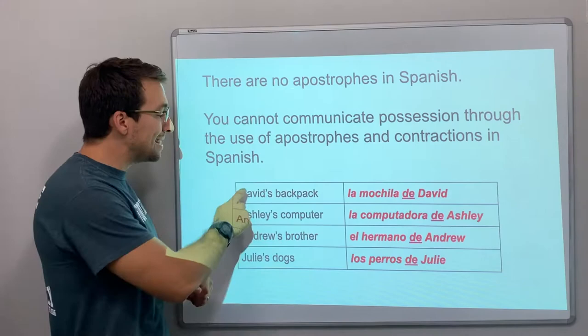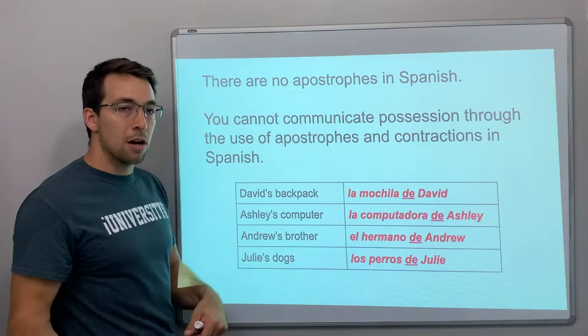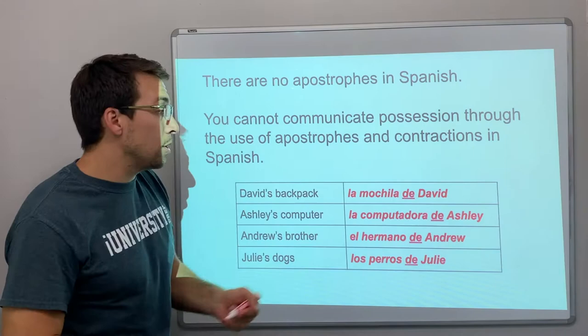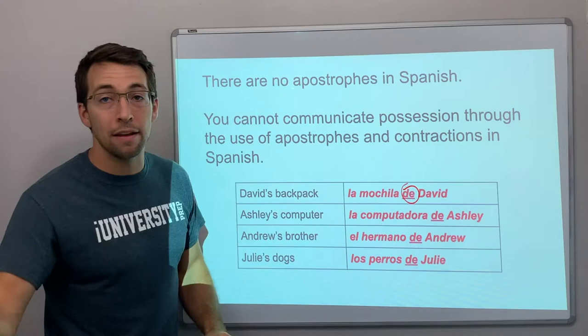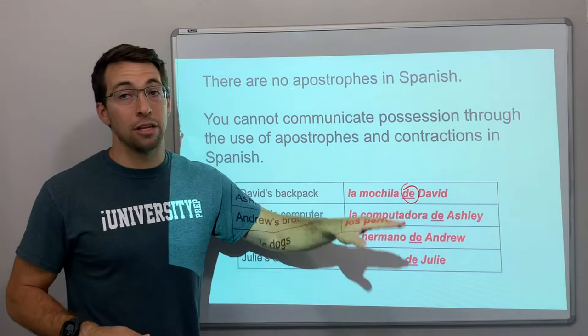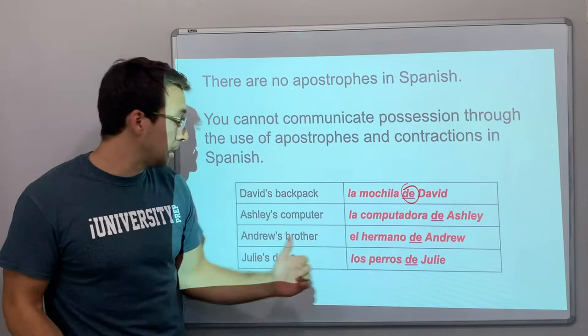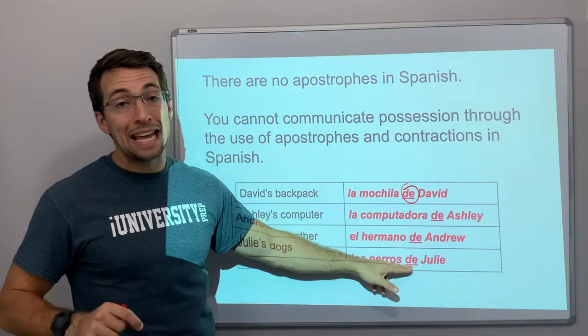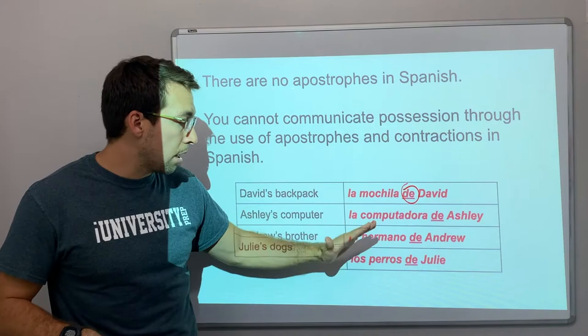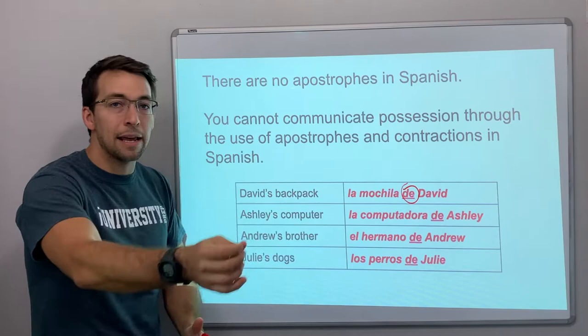In English it's really common: David's backpack, Ashley's computer, Andrew's brother, Julie's dog. You cannot do that in Spanish. Instead, we use the word de. La mochila de David — the backpack of David. La computadora de Ashley — the computer of Ashley. El hermano de Andrew — Andrew's brother. If it's plural: los perros de Julie — Julie's dogs. It doesn't matter the noun being possessed — you say that noun, de, and then who owns it.